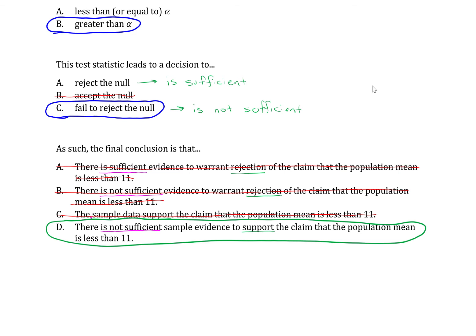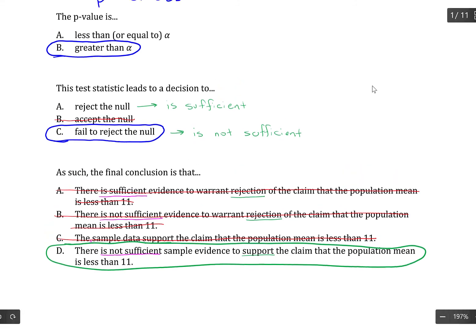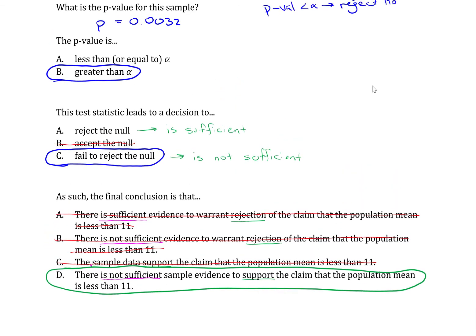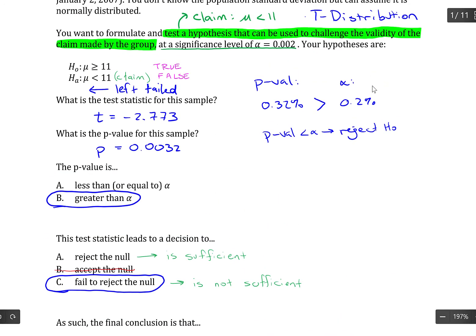But you can always rely on what I stated here. If you reject the null, put is. If failed to reject the null, is not. If the claim is in the null, we are rejecting it. If the claim is in the alternative, we are supporting it.